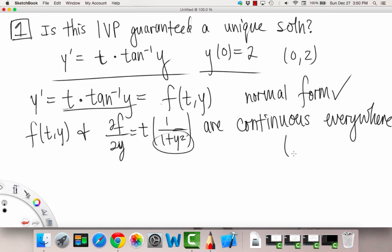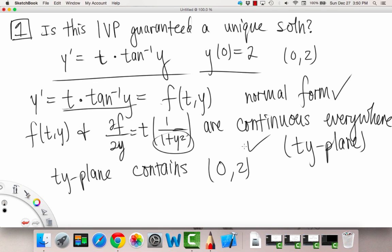Continuous everywhere on the ty-plane. And that means on the ty plane, that is. Ty-plane. And that's the second hypothesis there. And the third one is that everywhere, the ty-plane contains our initial value. Of course it does, because it's a ty point, (0,2). So our third hypothesis is satisfied.